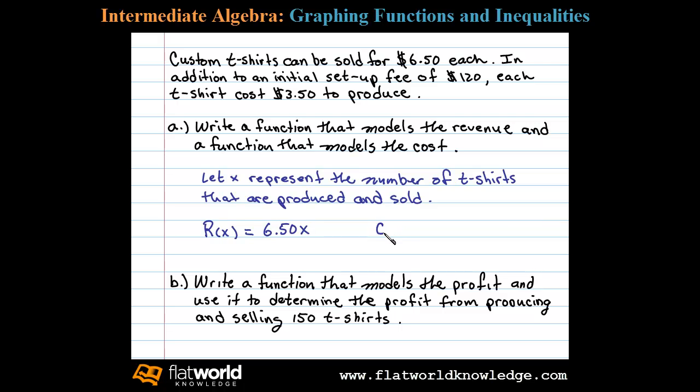Now the cost denoted with a capital C is equal to an initial setup fee of $120 plus the cost of producing the t-shirts. So it's $3.50 times x where x is the number of t-shirts produced. Let's write this as 3.50x plus 120. That's our cost function.